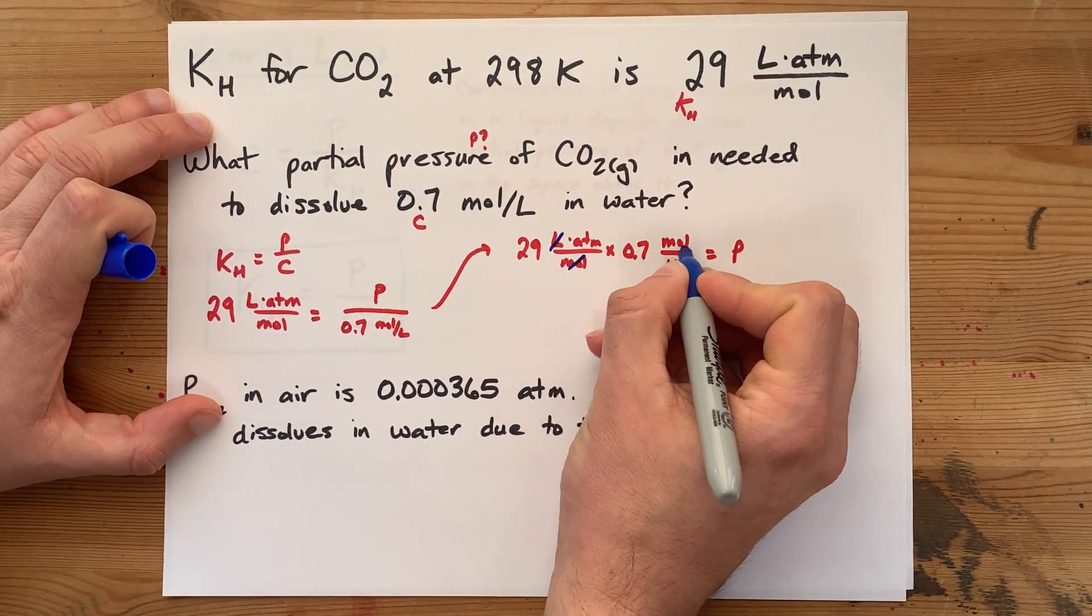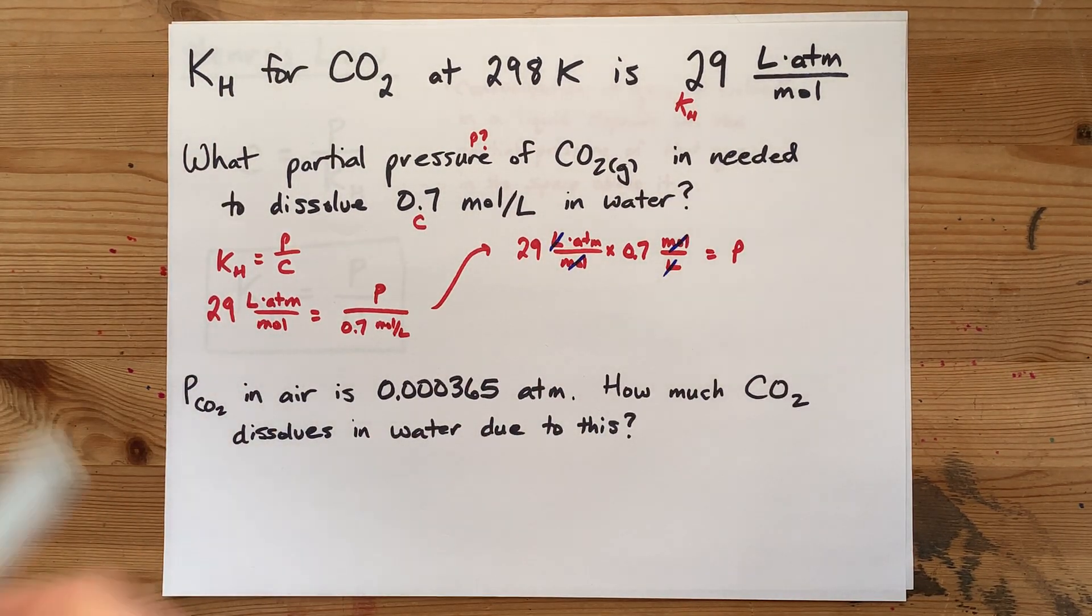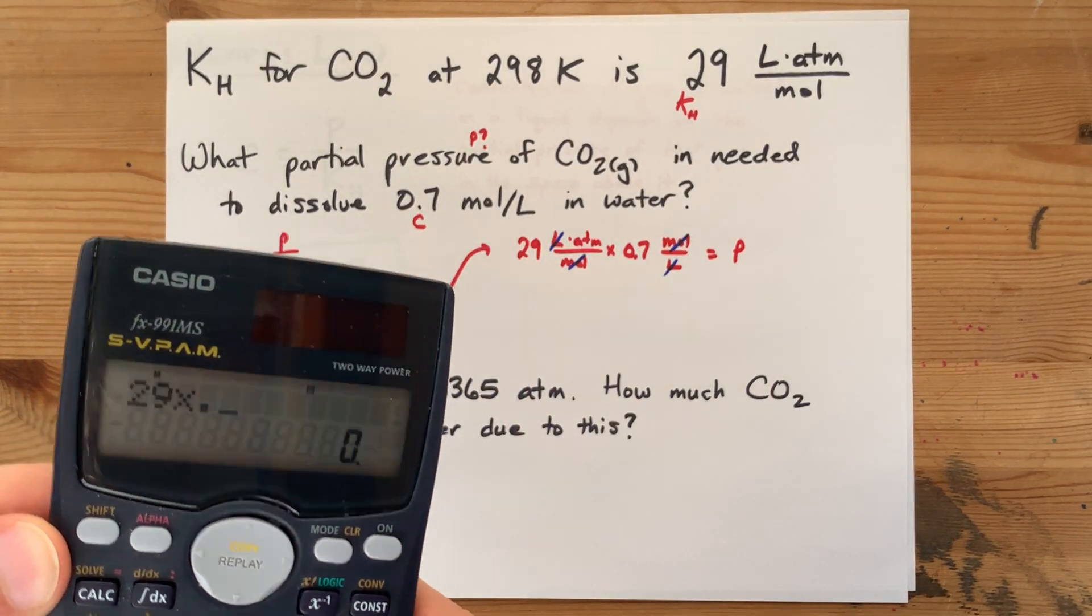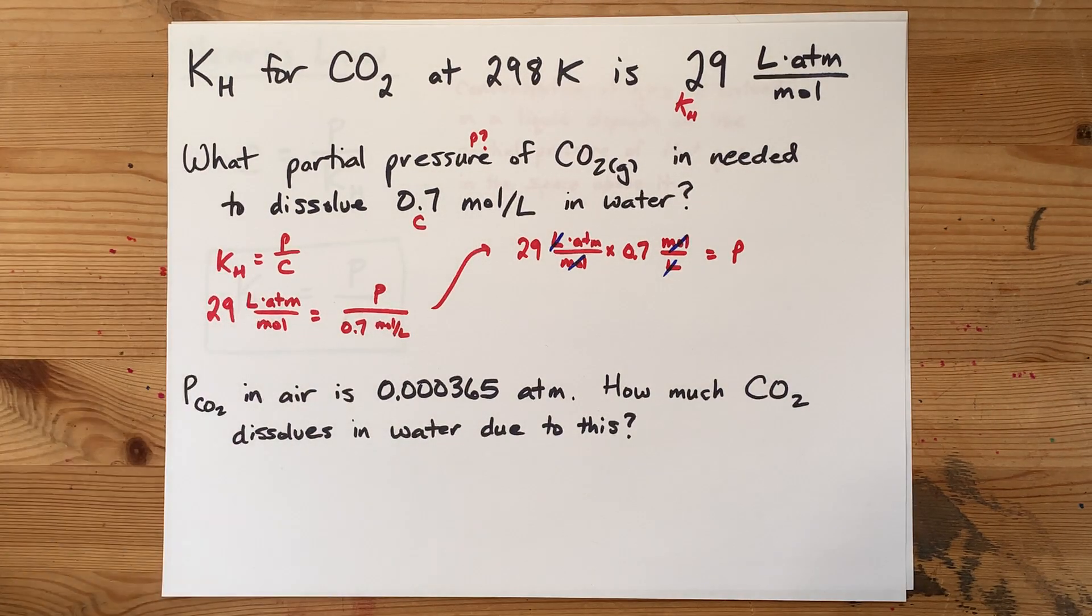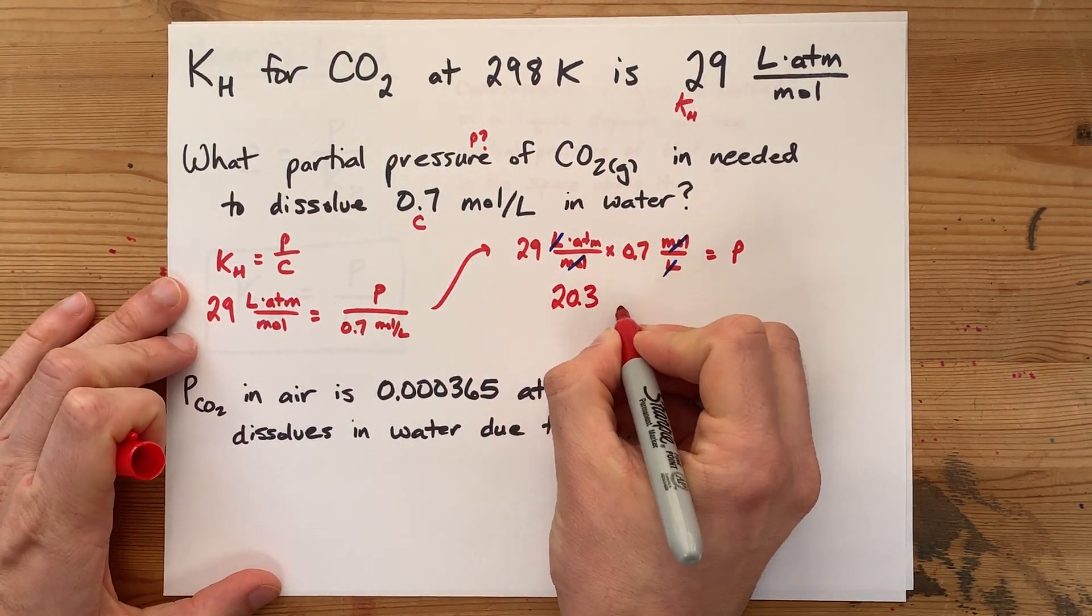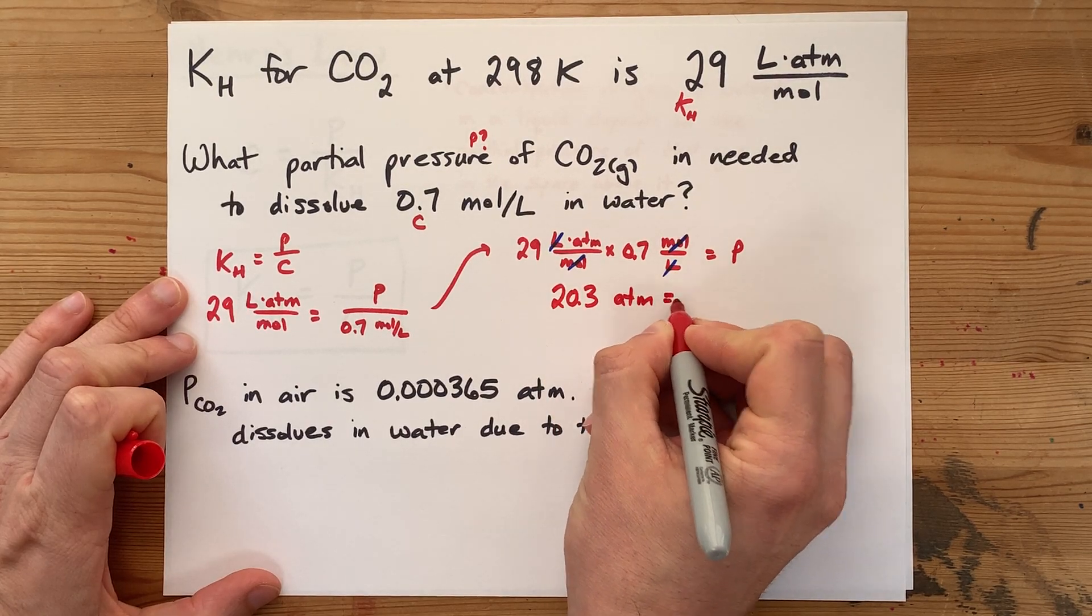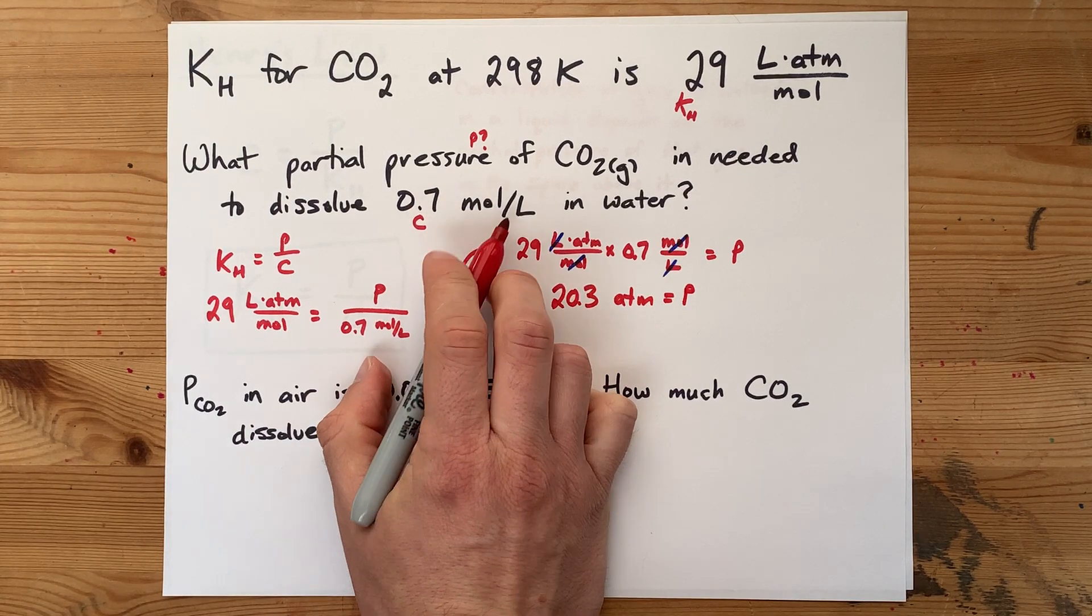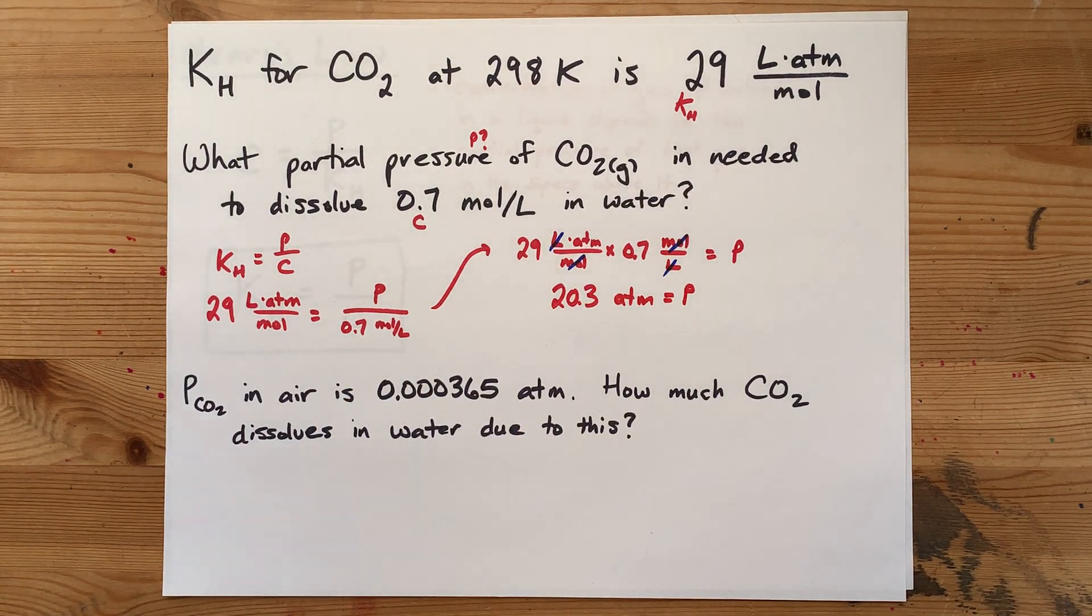So the liters cancel, the moles cancel. We end up with just atmospheres. How many? 29 times 0.7. We would need 20.3 atmospheres of just carbon dioxide in the air above that water in order to force a whole 0.7 moles per liter to dissolve inside.